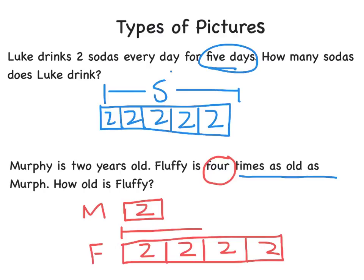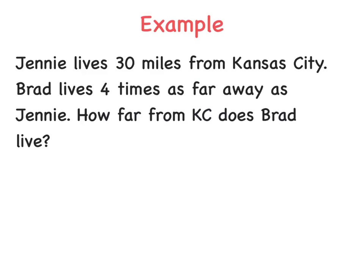Up top we can put our variable because that's what we're finding — Fluffy's total age — which when we count that up would be eight.